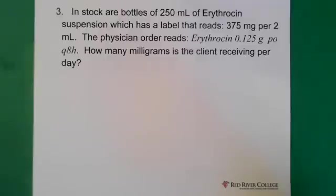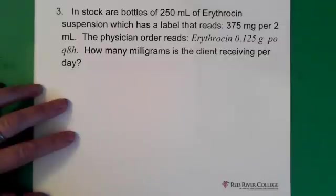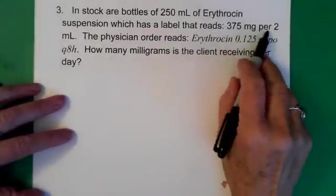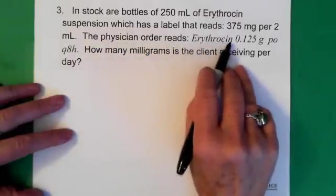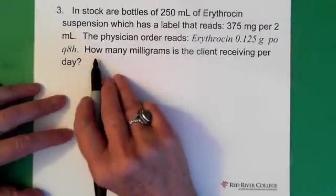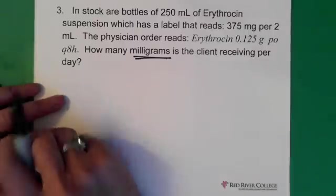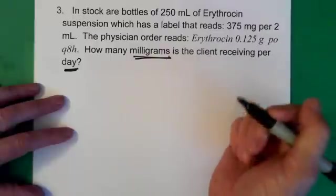In stock are bottles of 250 milliliters of erythrosin suspension, which has a label that reads 375 milligrams per 2 milliliters. So, that's our bottle. 375 milligrams per 2 milliliters. The doctor's order reads, erythrosin, 0.125 grams by mouth every 8 hours. The question says, how many milligrams is the patient receiving in one day? So, we're being asked for the grams or the milligrams.